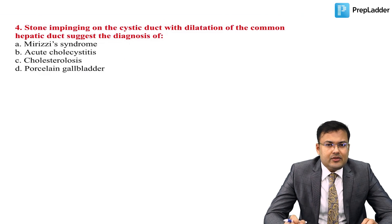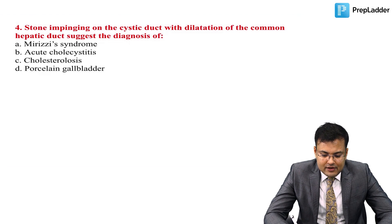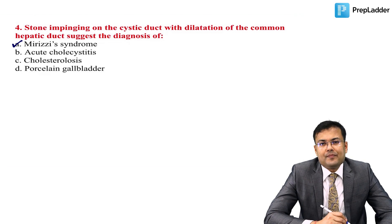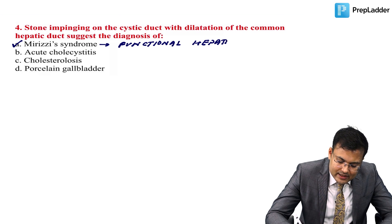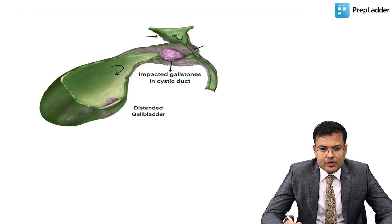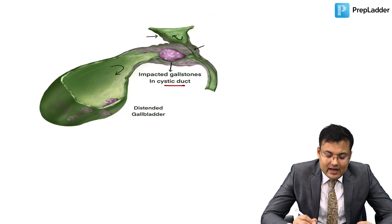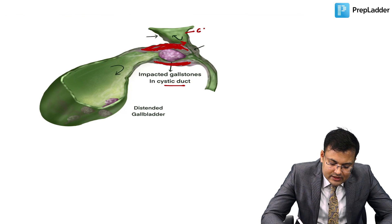Next question: stone impinging on the cystic duct with dilatation of the common hepatic duct — this is the classical description of Mirizzi syndrome, also known as functional hepatic syndrome. In the cystic duct there is an impacted stone; the surrounding inflammation compresses the common hepatic duct.